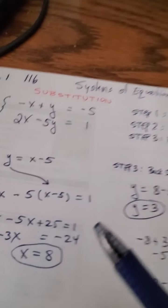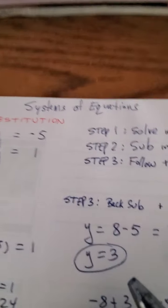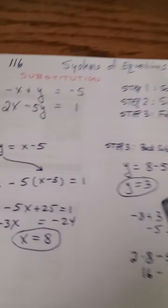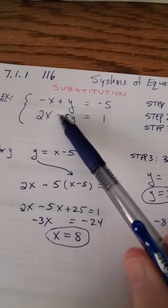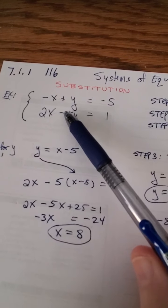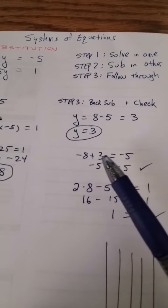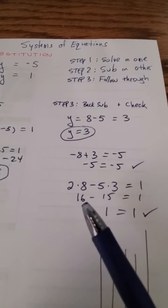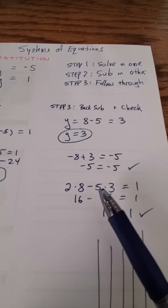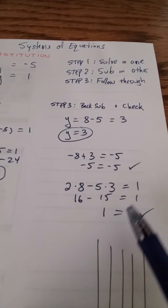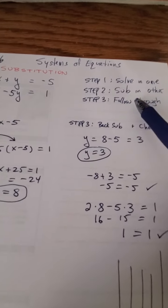Now I have x equals eight, y equals three. I solved the problem, and the final thing is really just to check the solution. So here's my two original equations and I'm just plugging in x and y. X is eight, y is three, so negative eight plus three equals negative five. Check. Two times eight minus five times three: sixteen minus fifteen equals one. Check.